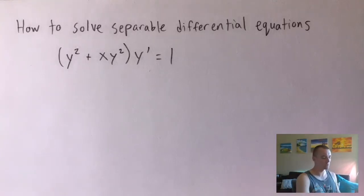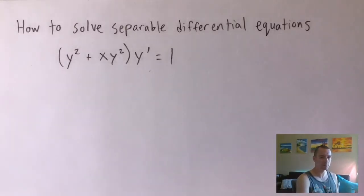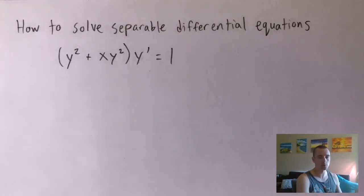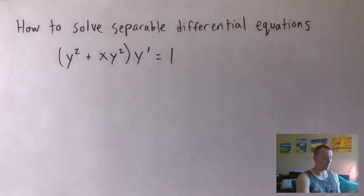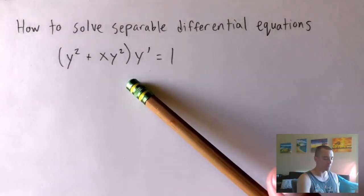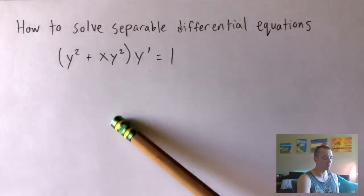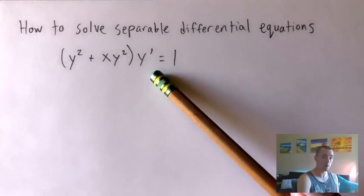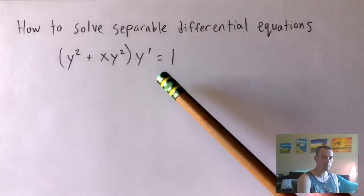Hey guys, Jake here coming at you with another math problem today. Here's the problem we're going to be going over today. I'm going to be showing you how to solve separable differential equations, and I'm going to be doing it with this example right here. The problem we are going to be going over is y squared plus x times y squared, all in parentheses, times y prime equals one.